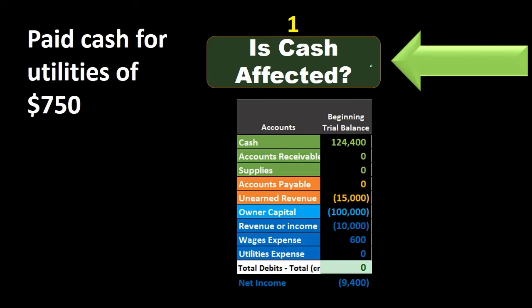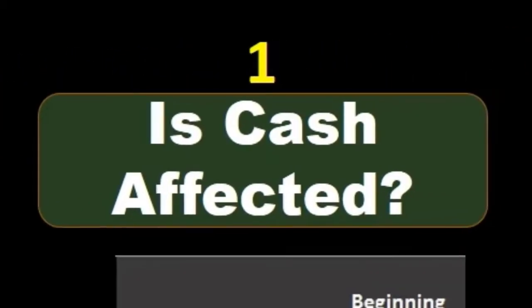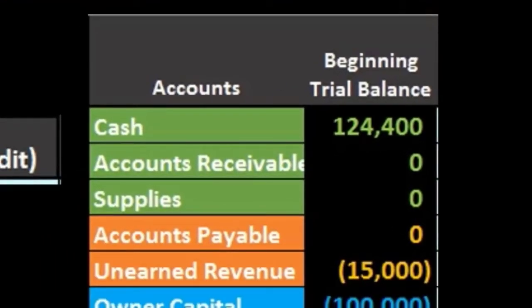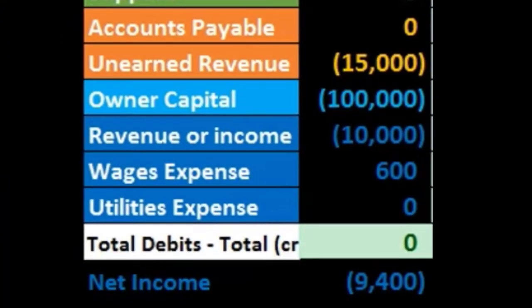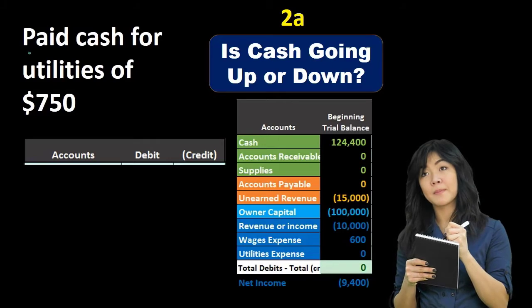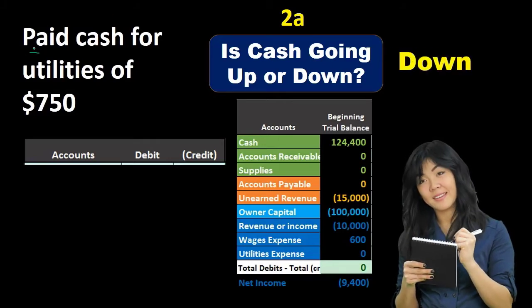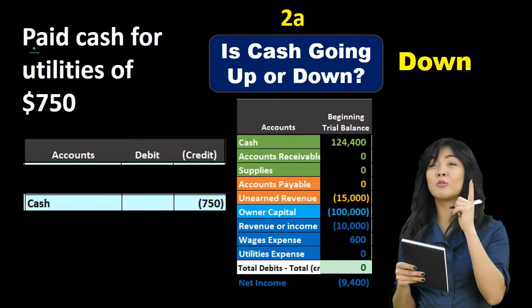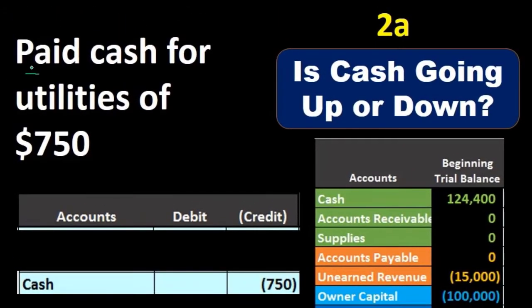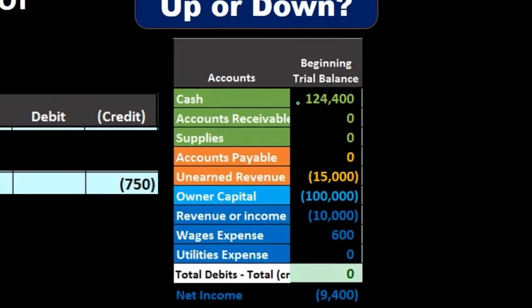Let's take a look at an example: pay cash for utilities of $750. We ask our first question — is cash affected? The key term here is 'paid,' so yes, cash is affected; we paid cash. We keep that in mind and write down whatever we can as soon as we can so we can start building on that. Then we ask: is cash going up or down? The keyword 'paid' indicates that cash is going down. We apply our one rule — do the same thing to increase it and the opposite to decrease — cash has a debit normal balance, so we make it go down by doing the opposite: a credit.